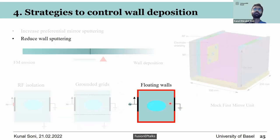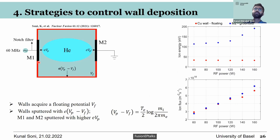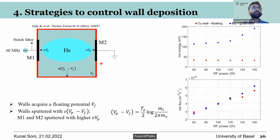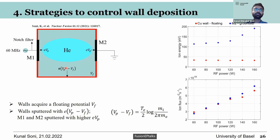Another useful technique is floating walls. Instead of grounding the walls of the first mirror unit, we simply allow them to float. The mirrors M1 and M2 remain grounded — M1 is DC grounded because of the notch filter, and M2 is directly grounded. On floating surfaces, the ion energy corresponds to Vp minus Vf, where Vf is the floating potential. The walls acquire the floating potential Vf, so the ion energy at the walls is Vp minus Vf, while the ion energy at the grounded M1 and M2 corresponds to eVp.